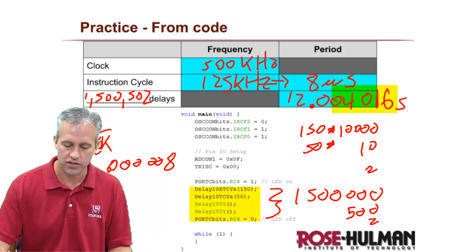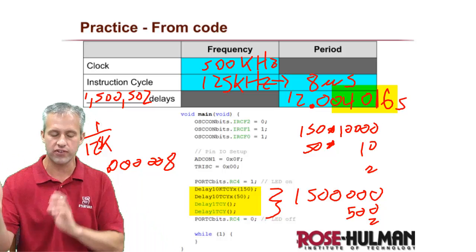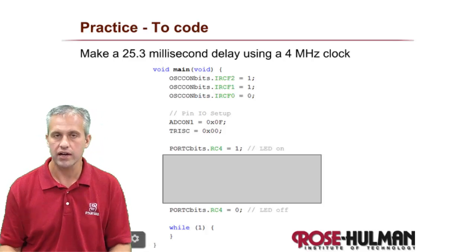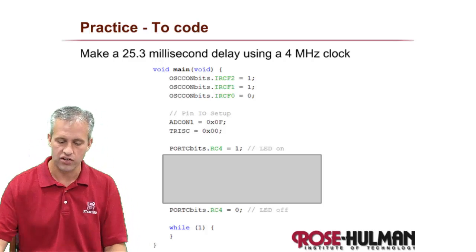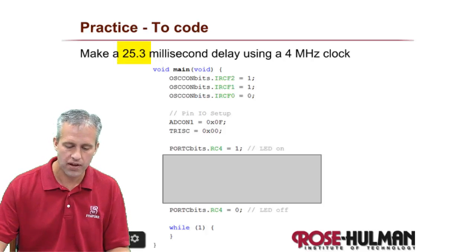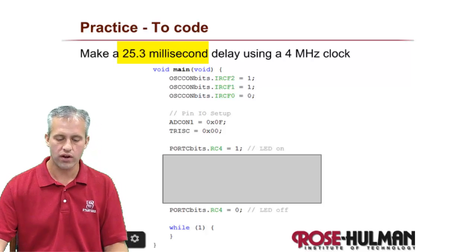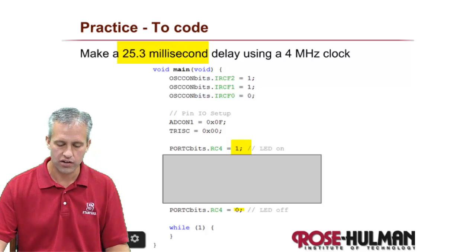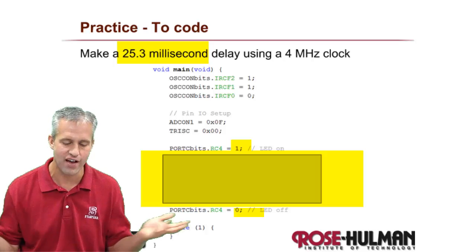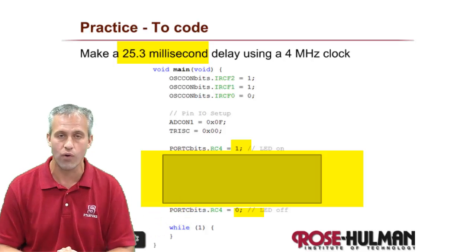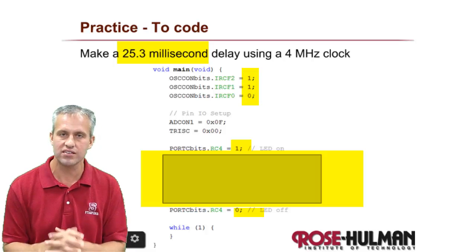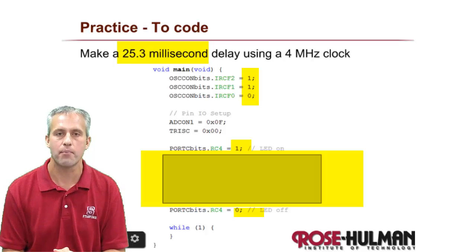But what you're more likely to do is you're more likely to go the other way, right? So you need a delay. Like in your head, you've decided you need a delay. And then you have to make it happen. Just to kind of pick one here. Let's say that you wanted the light. So here I'm turning it on. Here I'm turning it off. If you wanted to write the code in here to make it be on for 25.3 milliseconds, I don't know why you want that. But let's say you did. Using a four megahertz clock. So I gave you the easiest clock I could think of. See if you can make that happen on your own.